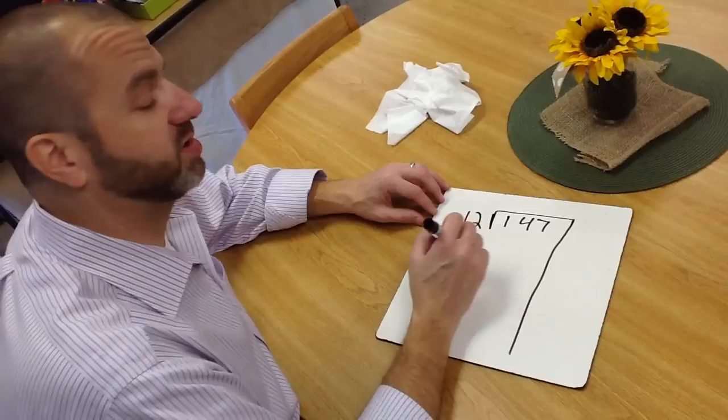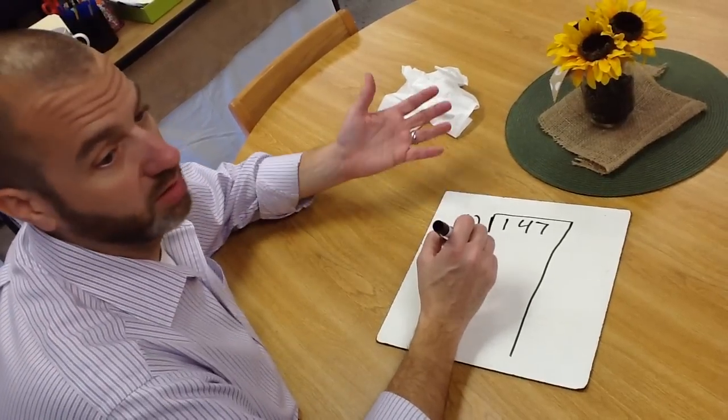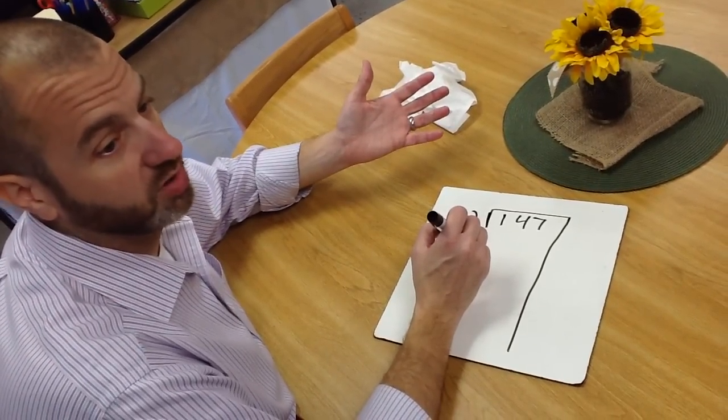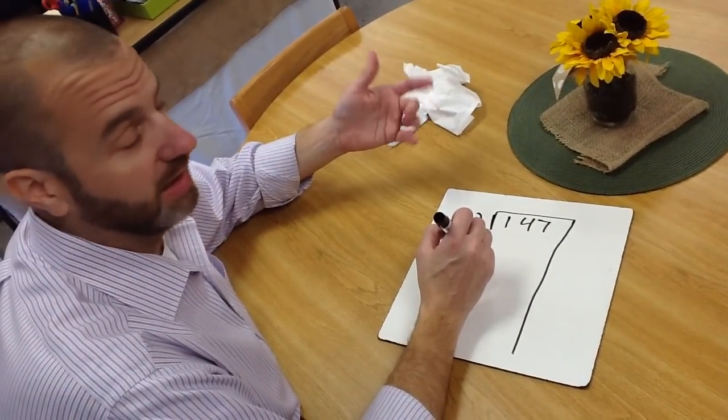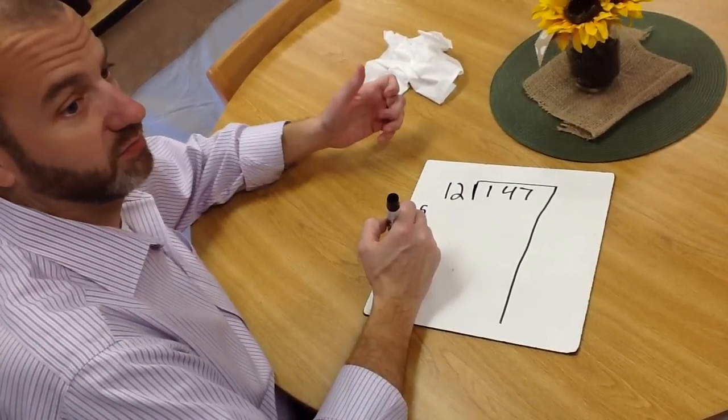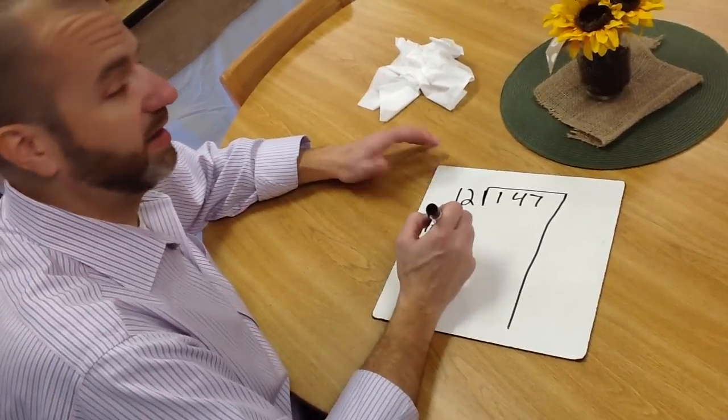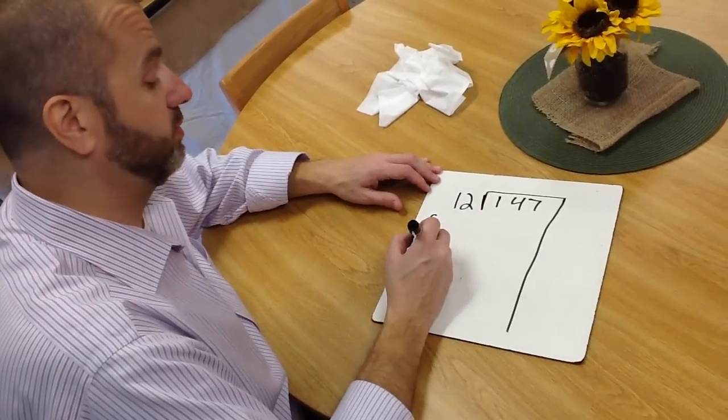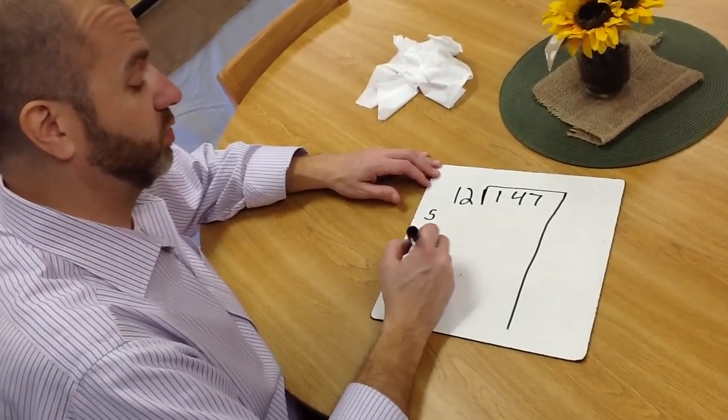So what we ask our kids to do is to use friendly numbers. Friendly numbers are very simple, it's numbers that you can count with real easy and things that you don't have to think about, for example, multiples of 5: 5, 10, 15, 20. Multiples of 10: 10, 20, 30, 40. Multiples of 100, or 1000...